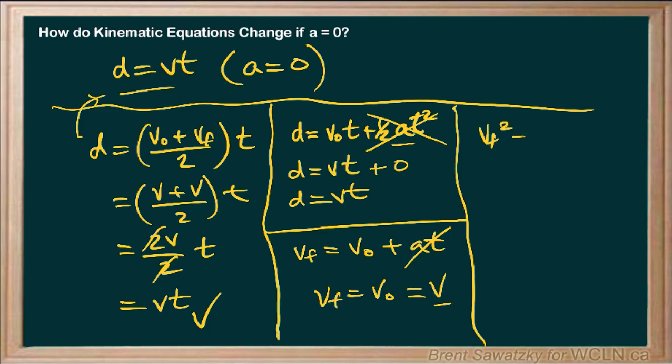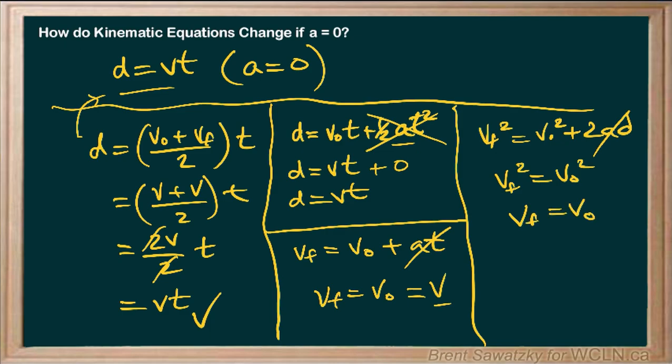One more: vf-squared equals v-naught-squared plus 2ad. If acceleration is zero, we're left with vf-squared equals v-naught-squared. Square root both sides, and vf equals v-naught — telling us that if acceleration is zero, there's no change in velocity. The point of this exploration is: don't look at these formulas as something new and wildly crazy. They're a little more sophisticated than what you've seen before, but totally consistent with all that old stuff you did back in the day.